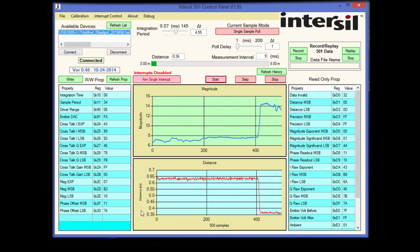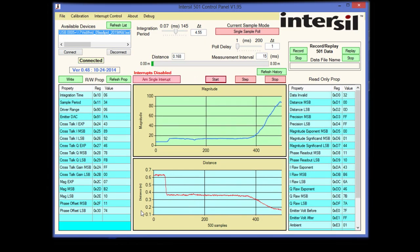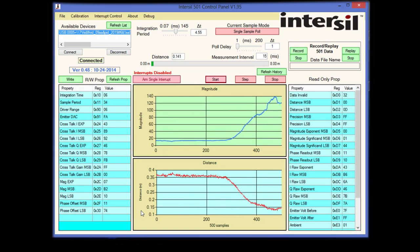If now I introduce an object, my hand for instance, between the board and the target, you will see that the distance measure drops because now I'm measuring the distance between the board and my hand. If my hand goes closer and closer to the board, the measured distance obviously decreases.